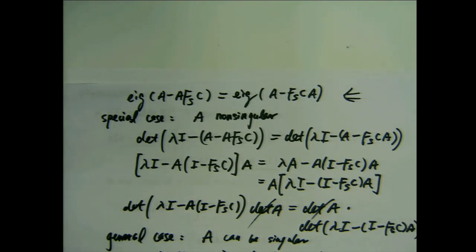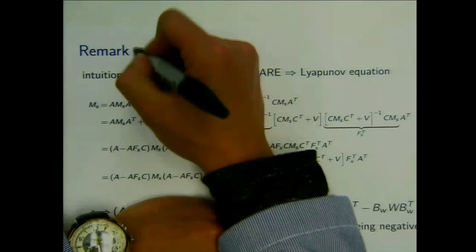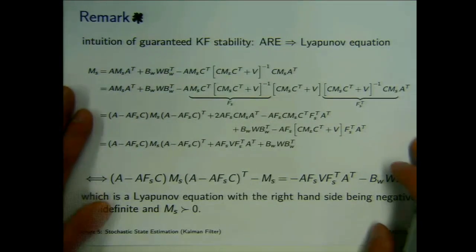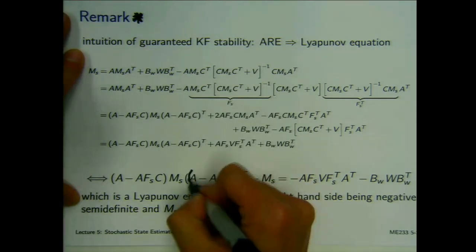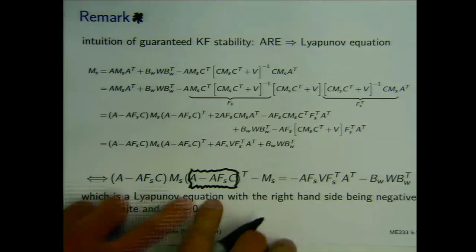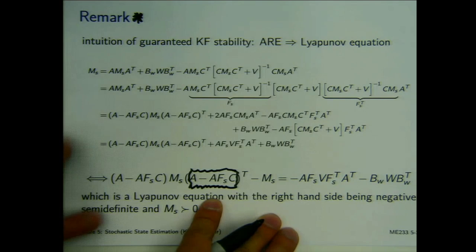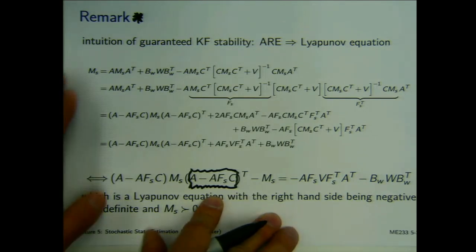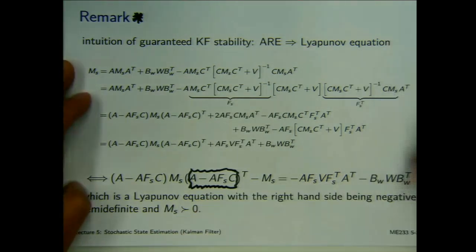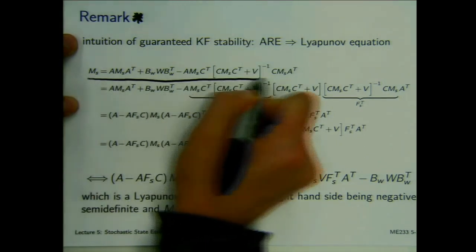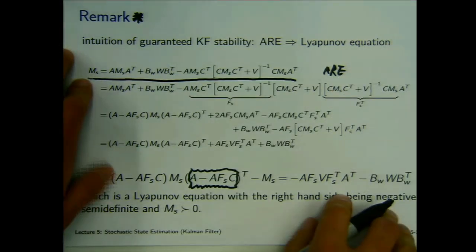This slide is not essential. The main idea is that we stated — but didn't prove — that the eigenvalues of the closed-loop matrix are inside the unit circle. This is explaining why the stability holds. It's very similar to the LQ analysis. The main idea is as follows: remember we have the algebraic Riccati equation, ARE.